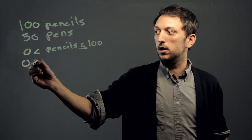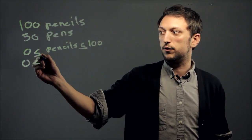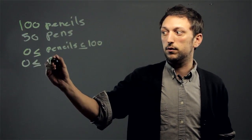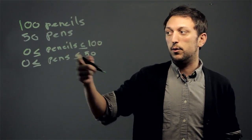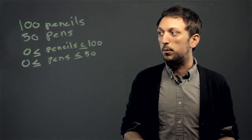And then 0 is less than, this would actually be or equal to pens, is less than or equal to 50. Now we know the constraints of our production capacity.